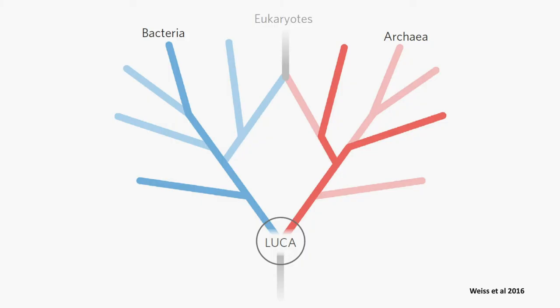There are some people who aren't happy with that. They say eukaryotes are a mixture of bacteria and archaea. For example, if you look at the metabolism of eukaryotes, it's more closely related to bacteria than to archaea. But if you look at the reproduction in eukaryotes, that's more closely related to archaea. So in some sense, we are mixtures.